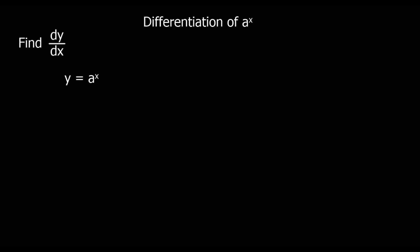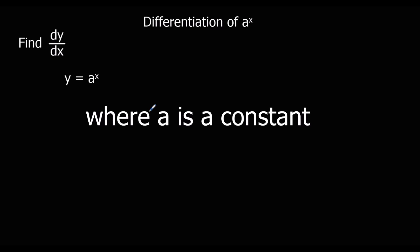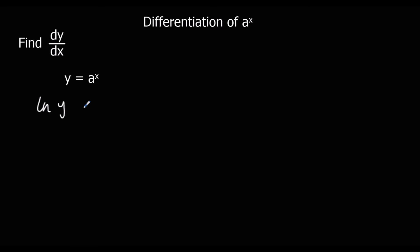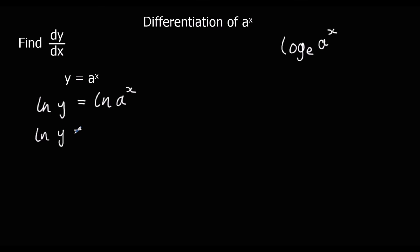In this video we're going to look at the differentiation of a to the power of x. So here we've got y equals a to the power of x. The first thing we're going to do is apply ln to both sides, which gives us ln y equals ln a to the power of x. Whenever we've got a power on a log, it can jump to the front, because ln means log e. So the power jumps to the front and we get ln y equals x ln a.